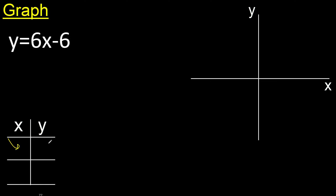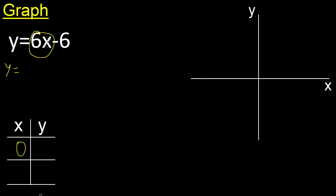Here any number, for example x equals 0. Therefore y equals 6 multiplied by 0, which is 0, minus 6, giving minus 6.